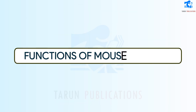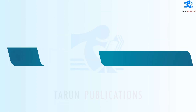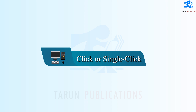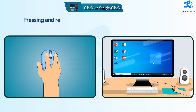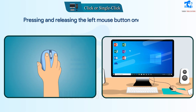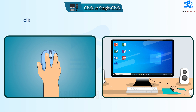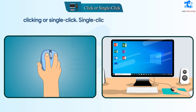Functions of Mouse Buttons. Click or single click: Pressing and releasing the left mouse button once is called clicking or single click. Single click is used to select an item.